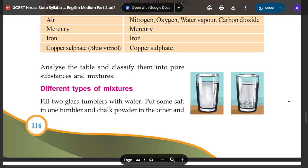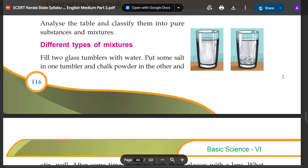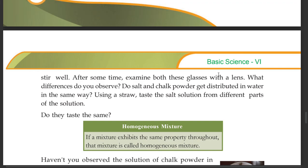Fill two glass tumblers with water. Put some salt in one tumbler and chalk powder in the other. After some time, examine both glasses with a lens. What difference do you observe? Do salt and chalk powder get distributed in water in the same way? Using a straw, taste the salt solution from different parts of the solution. What do you say?